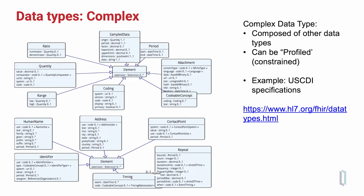It's also important to note that for these complex data types, some of them, such as human name and address, there are actually profiles specific to different jurisdictions and different countries. Different countries and different cultures represent a human name differently, and almost every country represents its postal addresses differently, so there need be profiles for those data types that are specific to those different countries or regions.